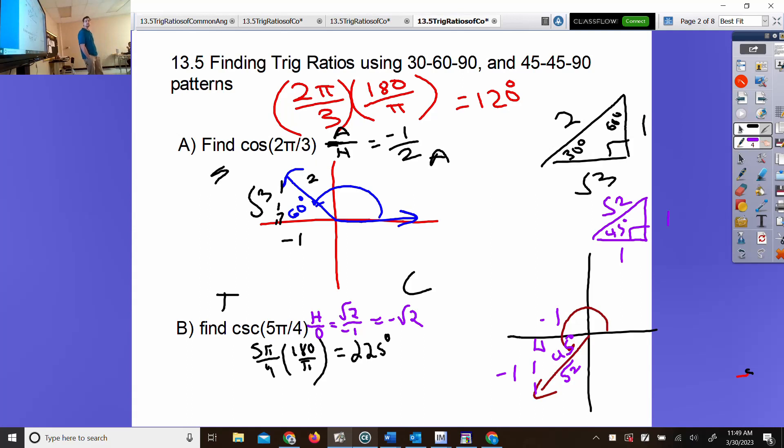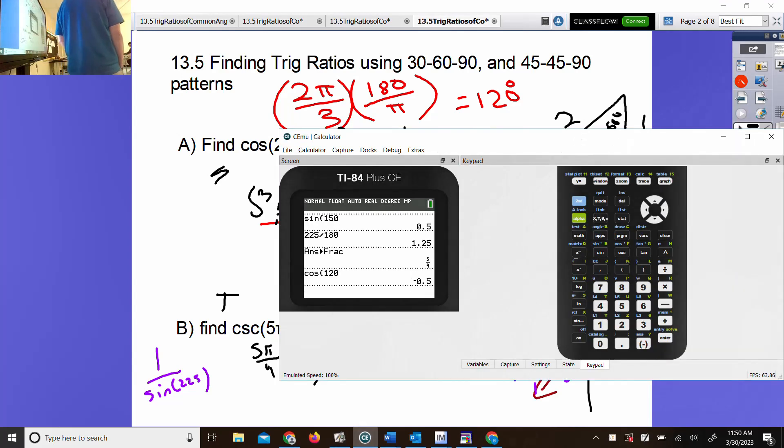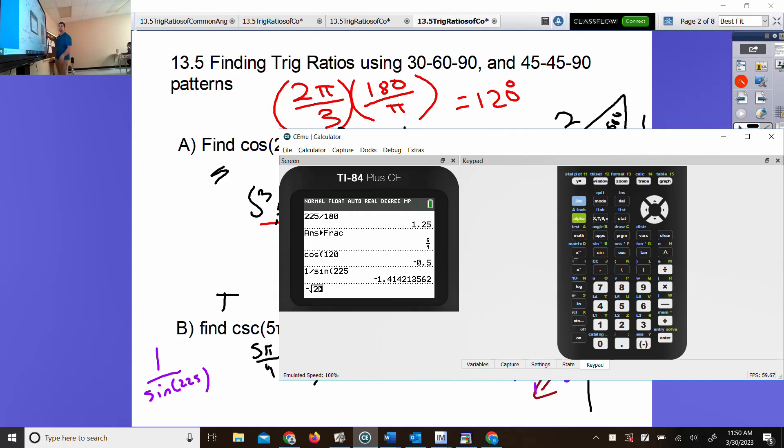You could check yourself. Cosecant is not on your calculator's button. Cosecant is 1 over sine. You could do 1 over sine of 225 and see what your calculator says. It's going to be a decimal. That's how you check yourself. Remember that cosecant is the reciprocal of sine.